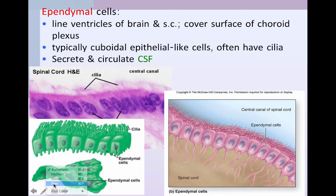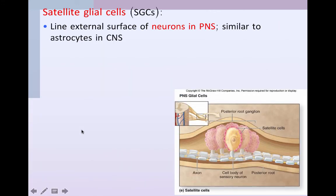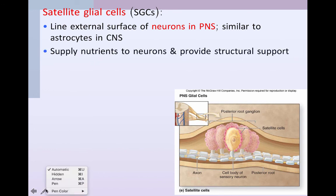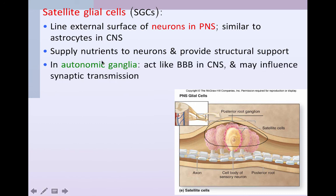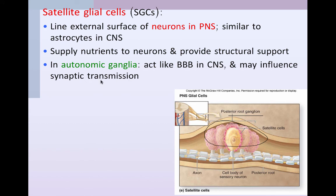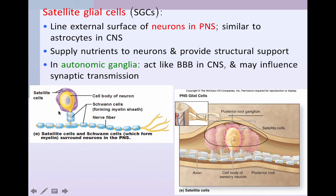The last type of glial cell is found out in the peripheral nervous system — satellite glial cells. They cover the surface of cell bodies, including the pseudo-unipolar cells found in the posterior root ganglia, supplying nutrients to these neurons and providing structural support. In the autonomic ganglia it's believed that they act much like the blood-brain barrier in the central nervous system, and they may also influence synaptic transmission.